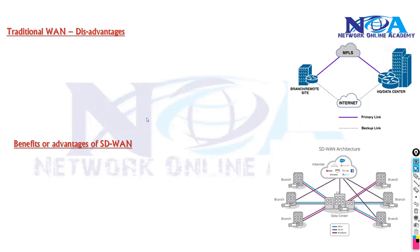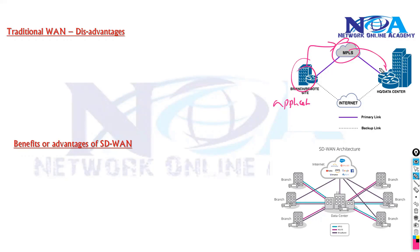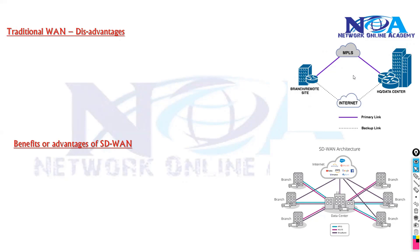Instead, branch offices should be able to go to the internet directly to access cloud-based applications without going through the head office. Traditional WAN also increases cost — additional MPLS links between data centers and branch offices add expense, and routing application traffic through the head office increases network equipment maintenance costs. There are also redundancy issues, which make deployment more complex and impact business productivity due to delays in accessing applications.